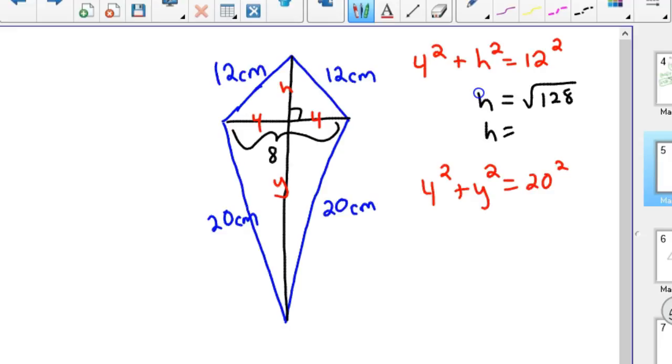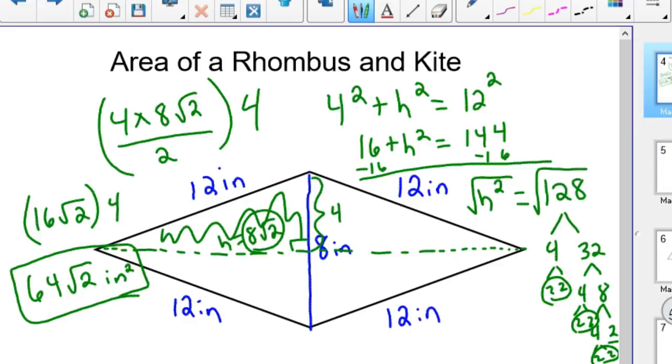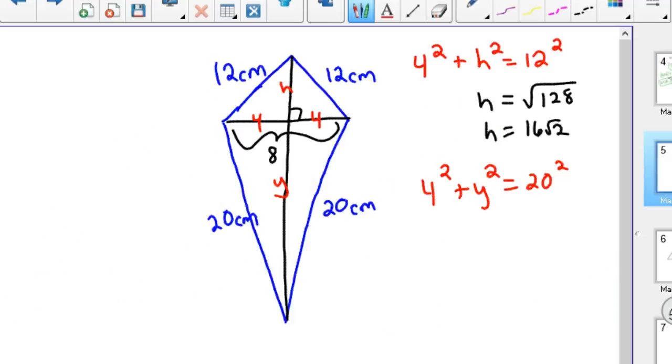So h is the square root of 128, which is also equal to, I think it was 16 root 2. Let me double check that. Nope, 8 root 2, pardon me, I just remembered it wrong. I didn't want to go through all that work again. So that's 8 root 2.